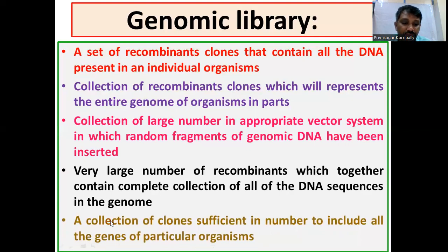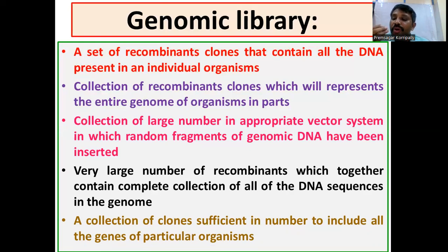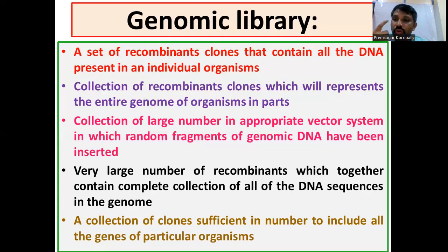A collection of clones sufficient in number to include all the genes of a particular organism. Based on the size of the fragment, you can calculate how many recombinant clones are required to have a complete genome. As in our example, the genome is 50KB and the fragment length is 4.1KB, so roughly 12 clones are required. Those 12 recombinant clones represent the entire genome of the organism in parts. This is all about the genomic library.